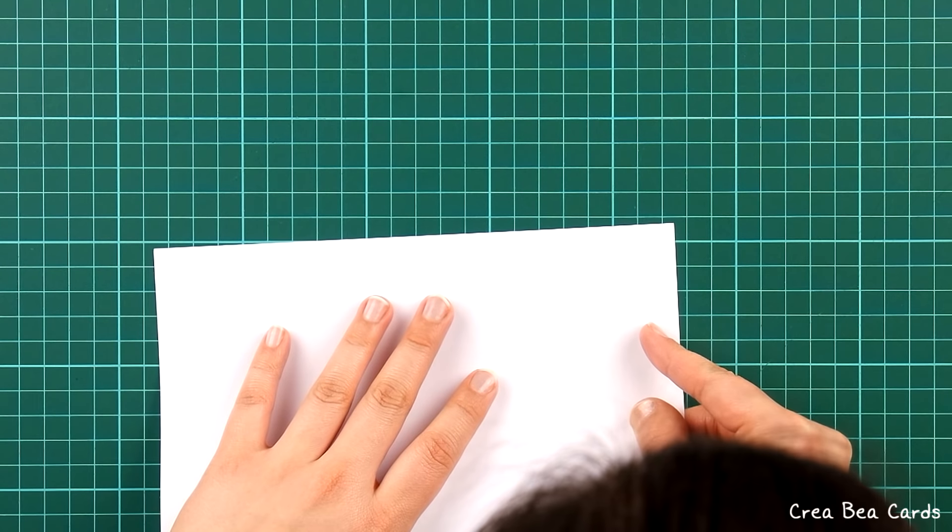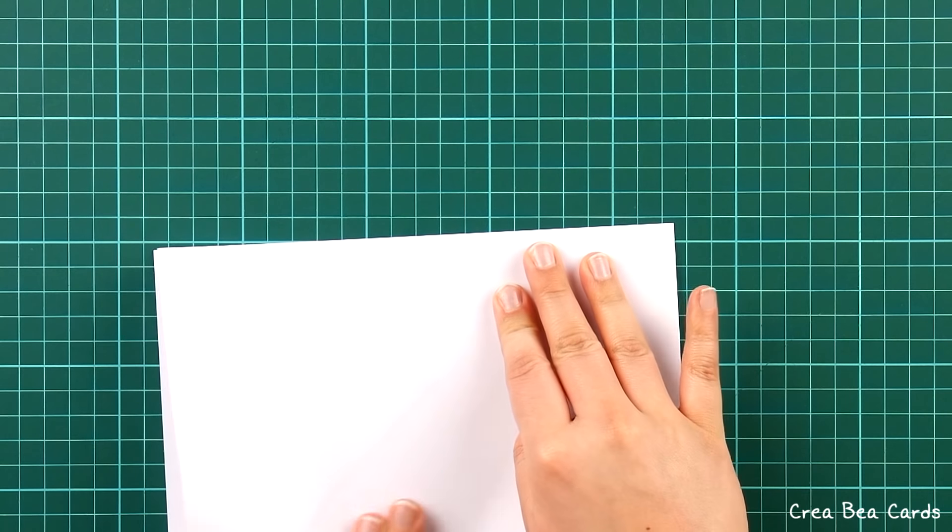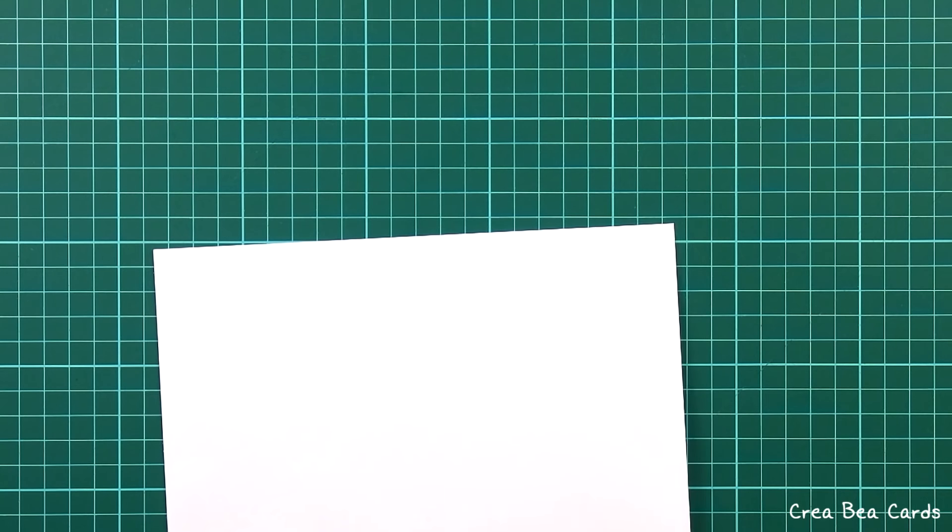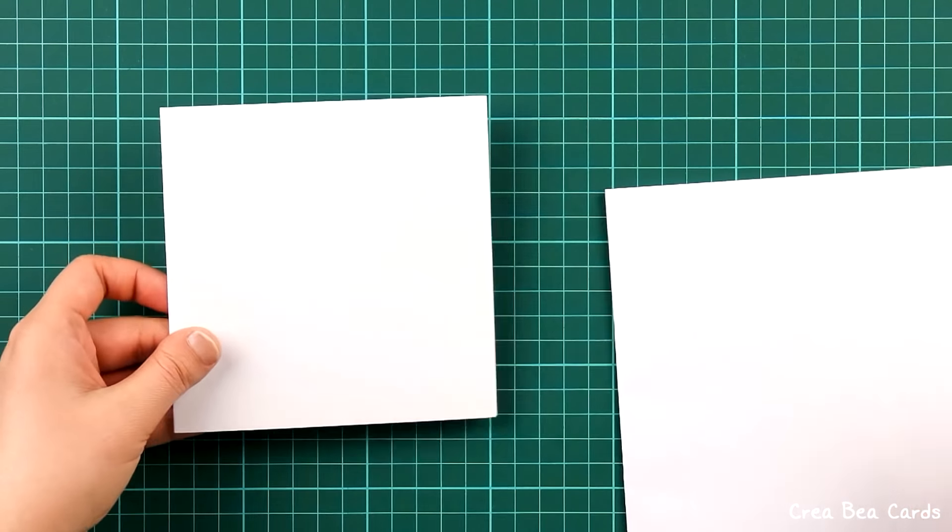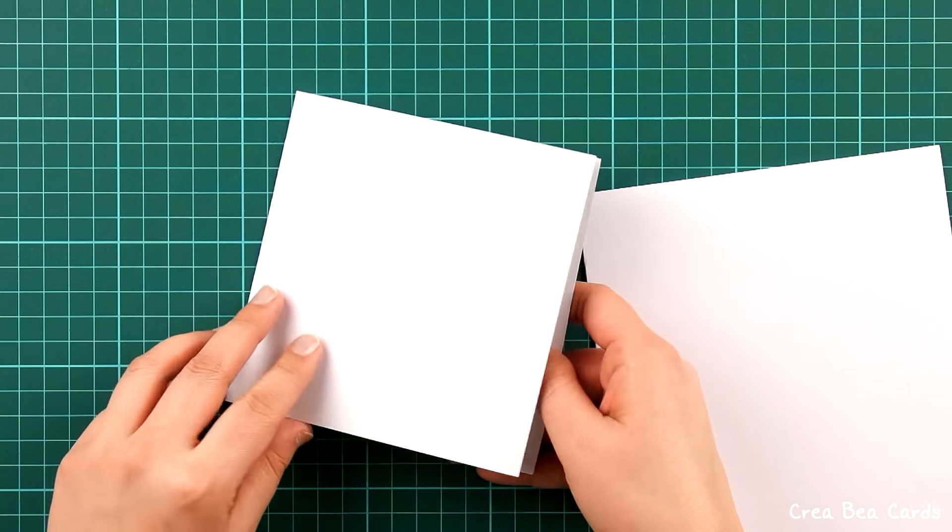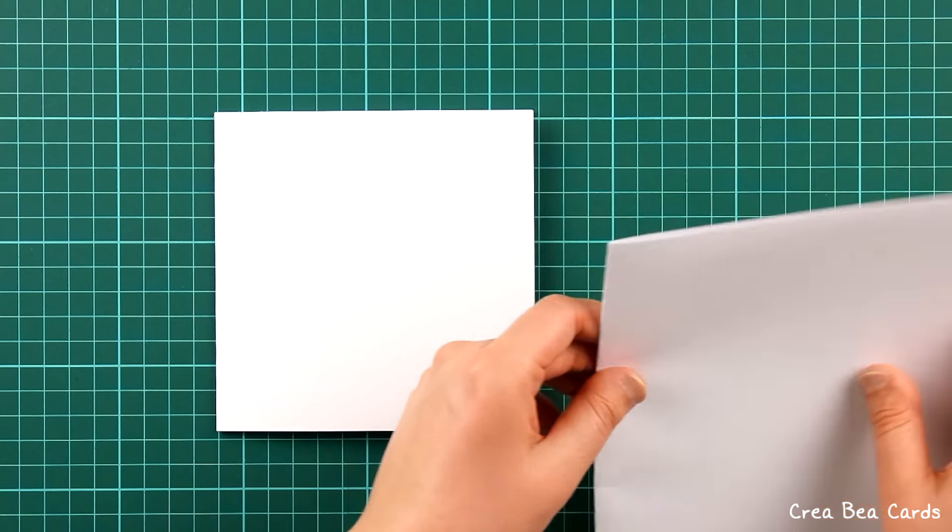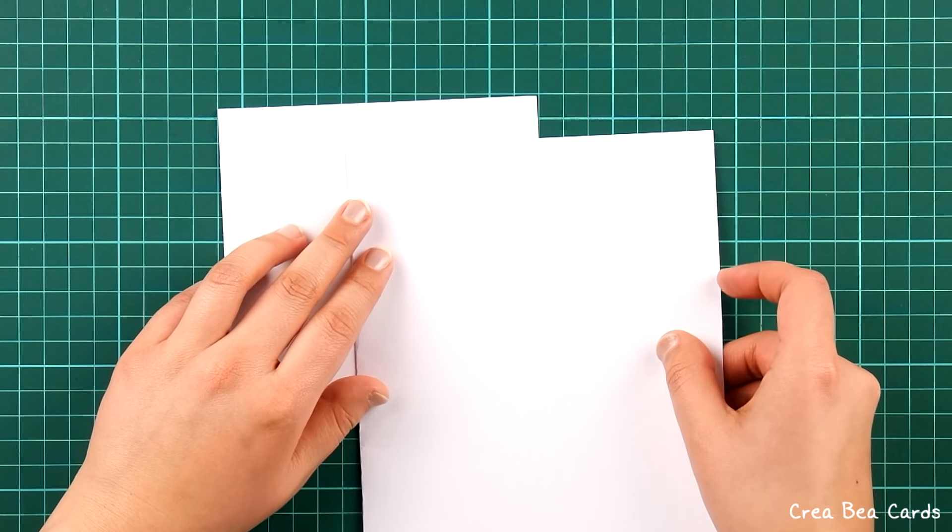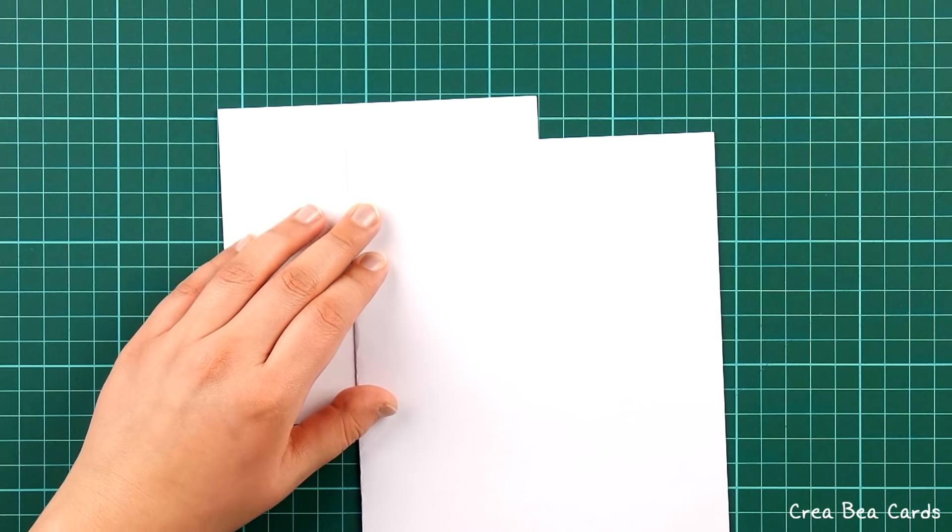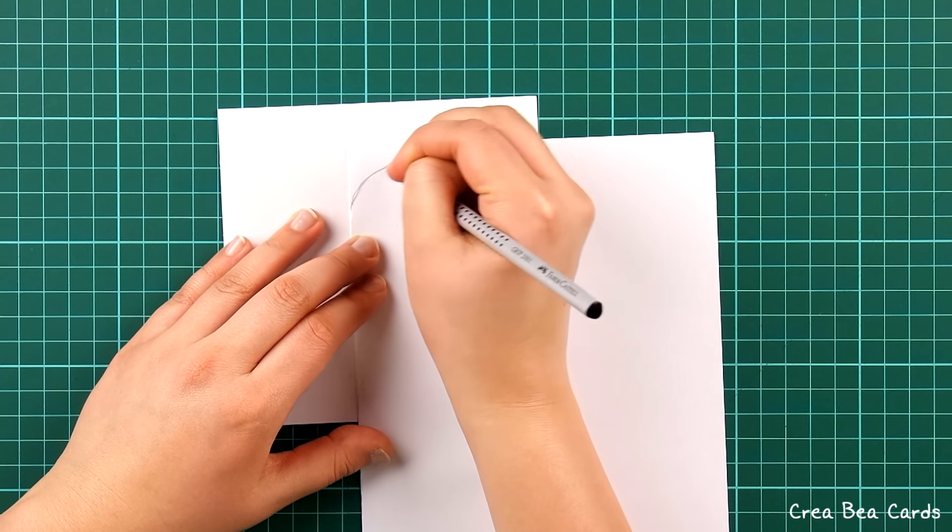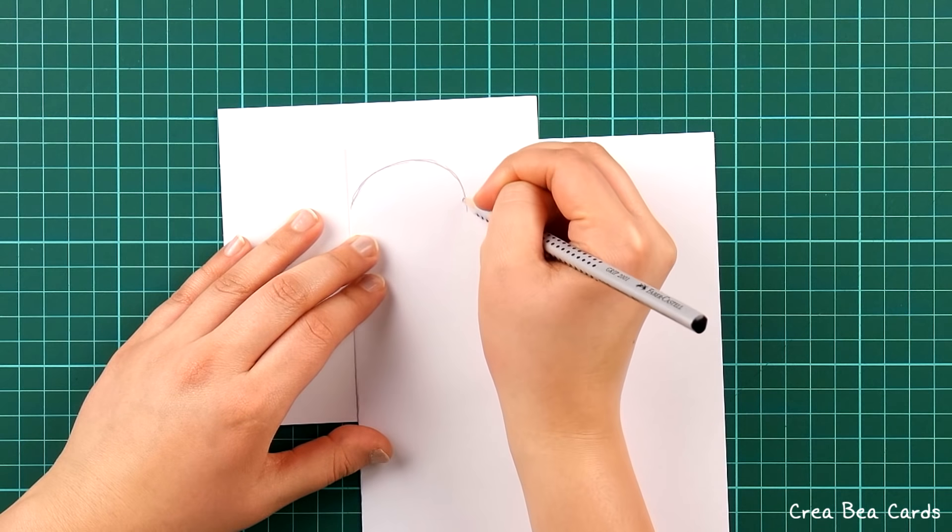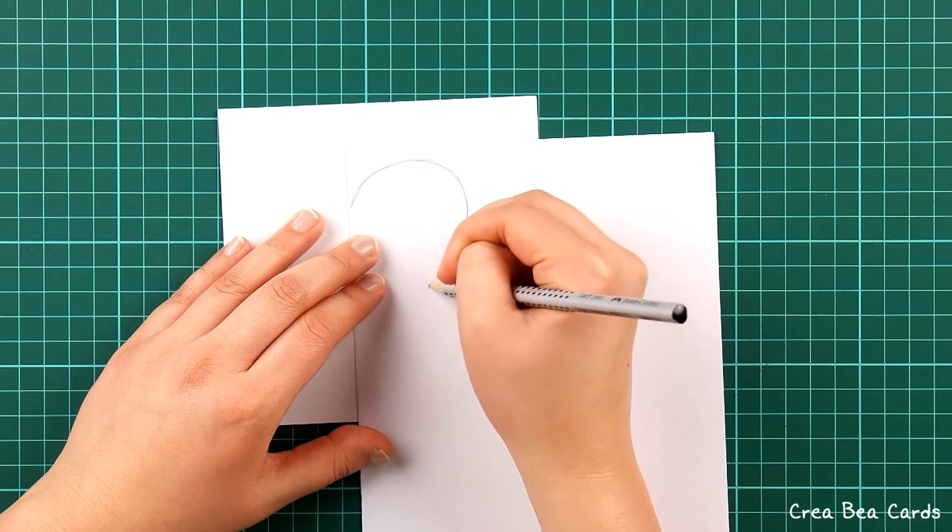First fold a sheet of white paper in half. Draw a half heart shape on the white paper. Please keep in mind that it should fit on your card front when it's unfolded.